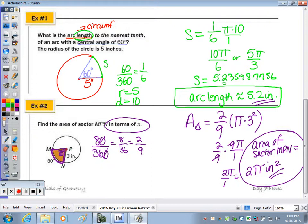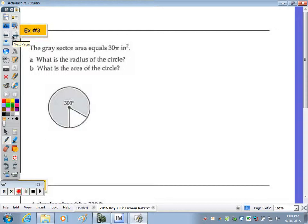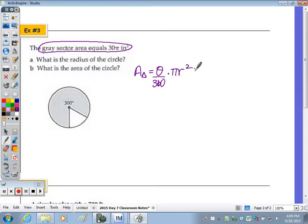And number 3, it says the gray sector area is equivalent to 30 pi inches squared. What is the radius? Part A. And then what is the area of the whole circle? So first, I'm going to use the information that the area of my sector is equal to 30 pi. And remember, the area of a sector is how much out of 360 we're talking about times pi r squared. I'm not given the radius. That's what I have to solve for in the first one. And then I'll use that to find the area of the whole circle. So I'm looking for r.